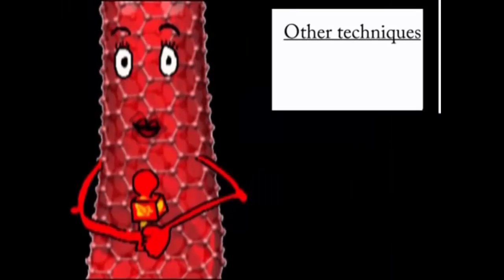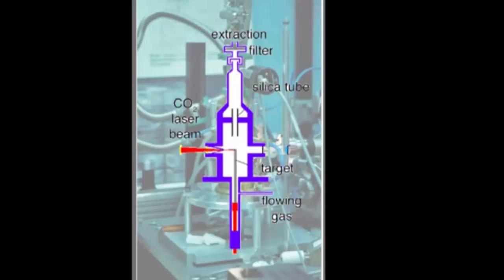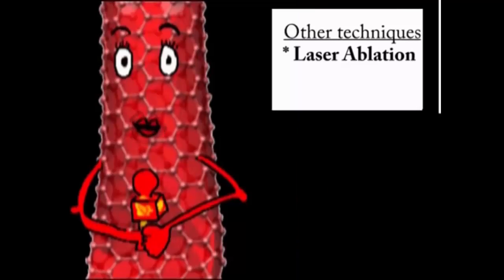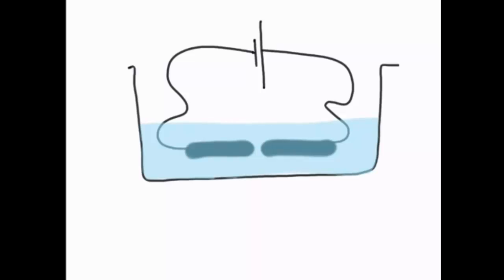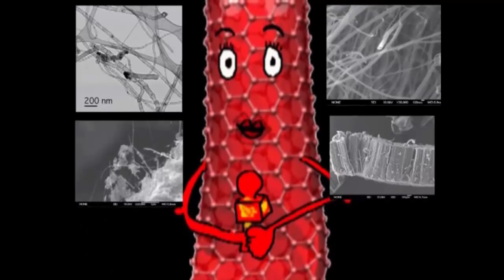Arc discharge and CVD are the most common techniques, but there are others like laser ablation — where a laser vaporizes carbon atoms from a graphite target, normally producing single-walled nanotubes — and electrolysis, where two graphite electrodes are immersed in molten ionic salts, producing only multi-walled nanotubes with very few walls, 10 to 15, normally bundled together. As you can see, there are different techniques to produce carbon nanotubes, and each technique produces nanotubes of different qualities.